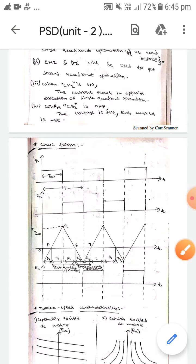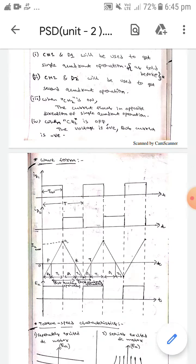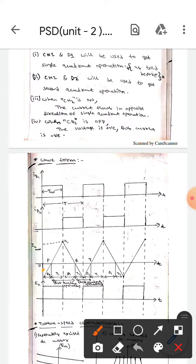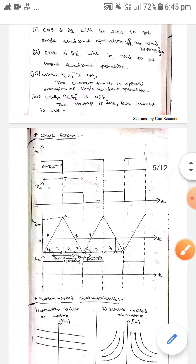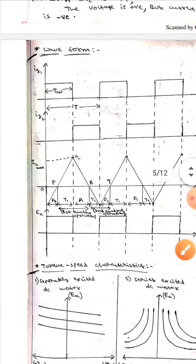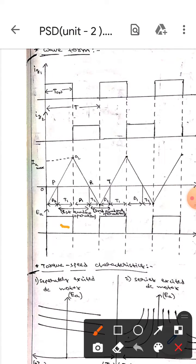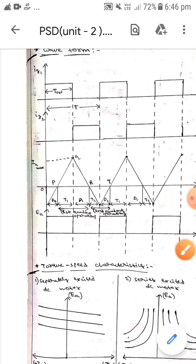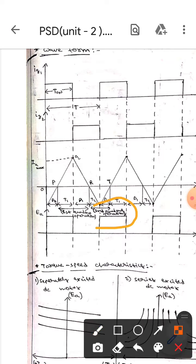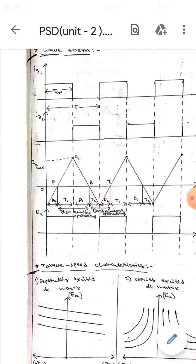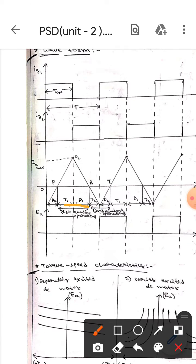This is the waveform of second quadrant for separately excited DC chopper motor. Here this is the current waveform and this is the voltage waveform. If you observe here, let me zoom it. This is the first quadrant operation and this is the second quadrant operation.